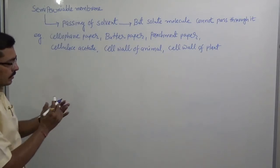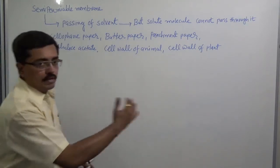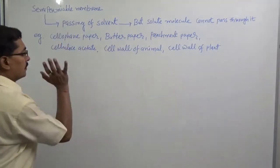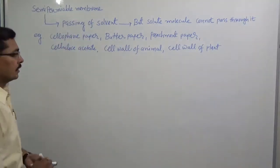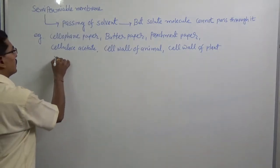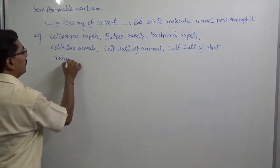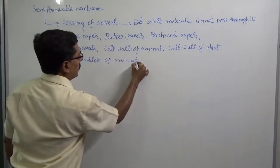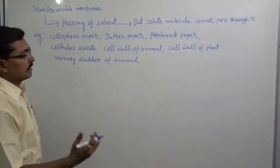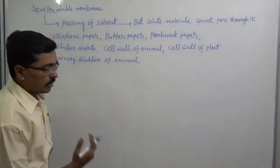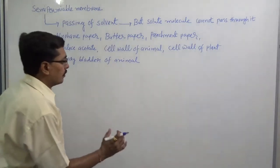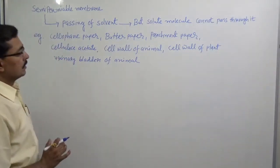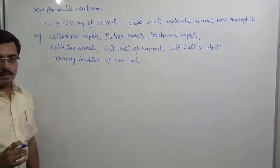Throughout semi-permeable membranes, solvent molecules can freely pass from one part to another, but solute molecules are not allowed to pass. The best example is the urinary bladder of an animal — urine molecules can pass through it, but important solute components of our body are not allowed to pass. So it is known as a semi-permeable membrane.